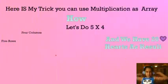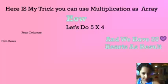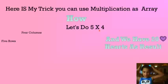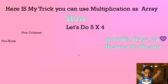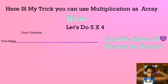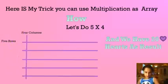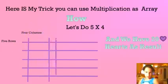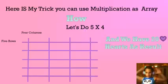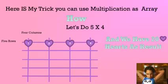Here's my trick: you can use multiplication as an array. Let's do 5 times 4. One, two, three, four, five rows. One, two, three, four columns.